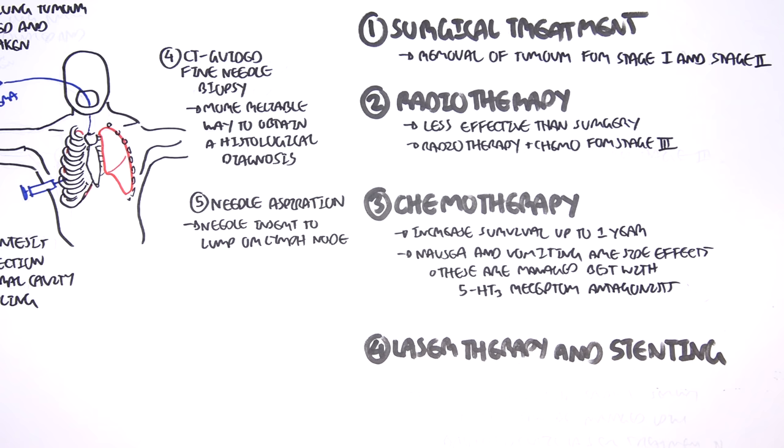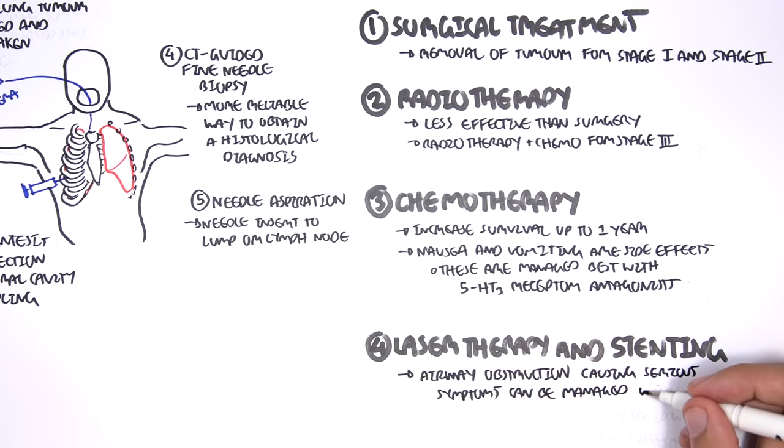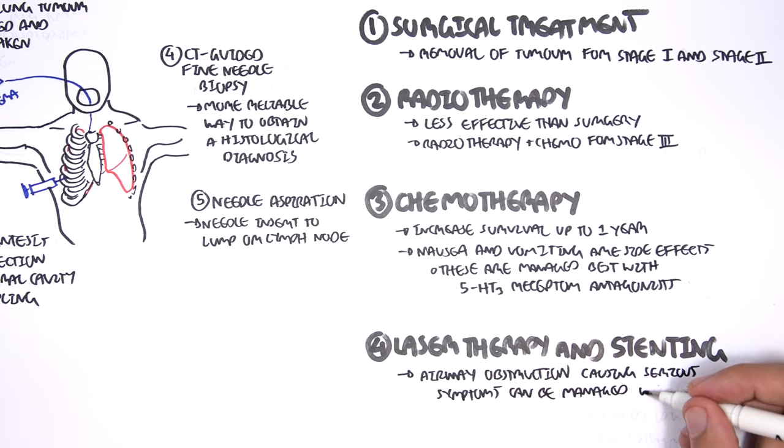Laser therapy and stenting can also be done. Airway obstruction from the tumor growth causing serious symptoms can be managed using laser treatment and stenting. Essentially, you basically remove the obstruction so air flow can return as normal.